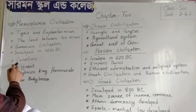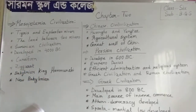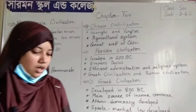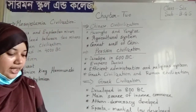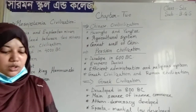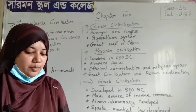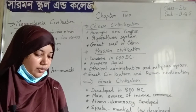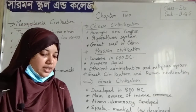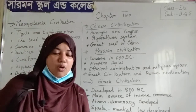The next topic is Cuneiform. It is a type of script invented in Mesopotamia, and the name of this script was Cuneiform.